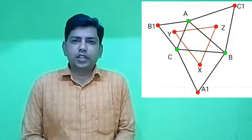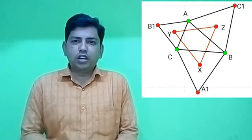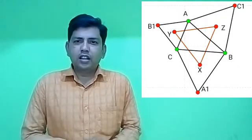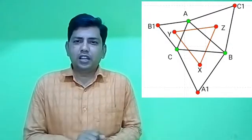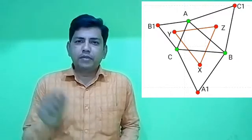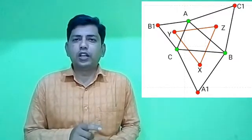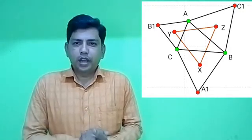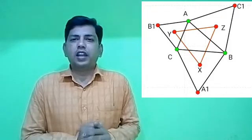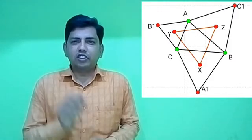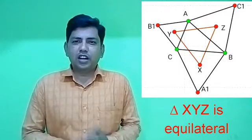Napoleon's theorem says that in each triangle ABC, we draw three equilateral triangles on the sides AB, BC, and CA. The three triangles are ABC2, BCA2, and CAB2, and their centroids are X, Y, Z. Then XYZ is an equilateral triangle.